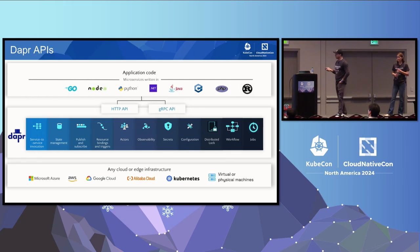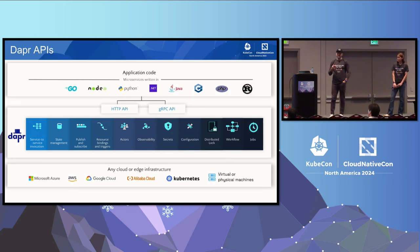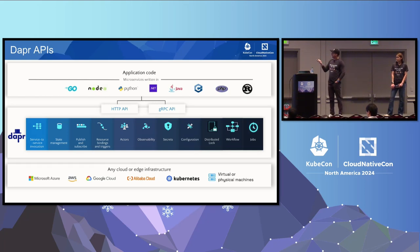All of that runs on Kubernetes. DAPR runs as a separate process as a sidecar. You can also run without Kubernetes, but we really built it for Kubernetes as well. We also offer SDKs in different programming languages and you can talk via HTTP or gRPC. If you want to skip SDKs, you can also talk directly with the APIs.